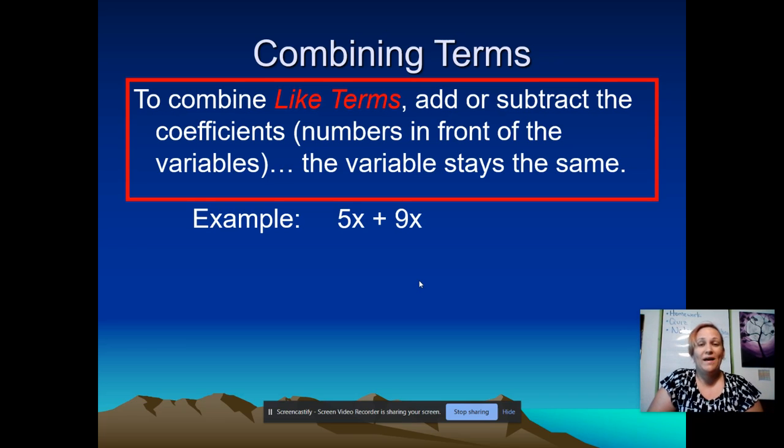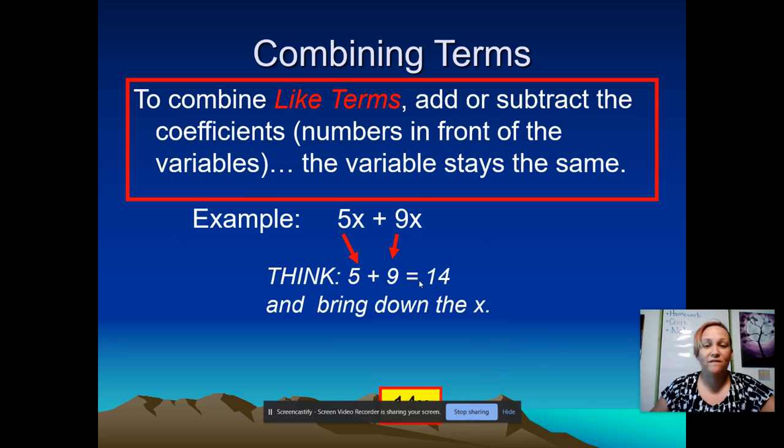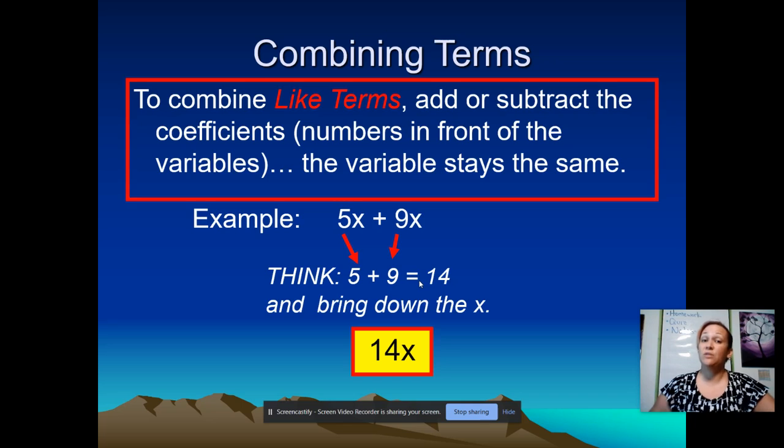So in this example, where I have a 5x and a 9x, I'm going to think in my head, 5 plus 9. Notice I didn't use the letter x at all. And I thought, okay, that answer is 14. Once I get the number part of my answer, I'm just going to take the variable exactly how it was. And I'm going to tack it on at the end of the number. And so my final answer is 14x. Again, notice that the variable did not change. Only the numbers changed.